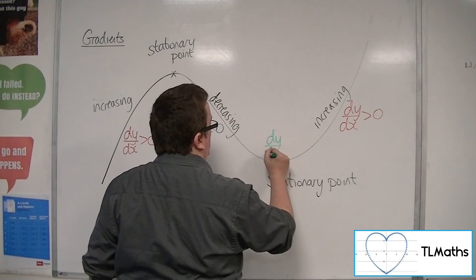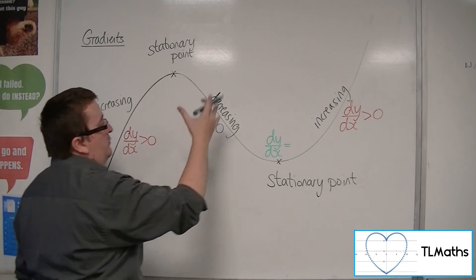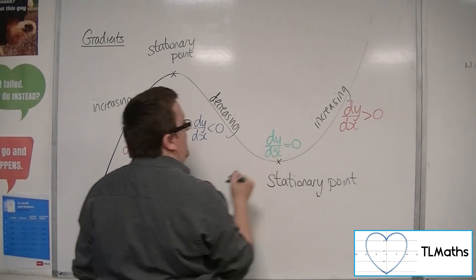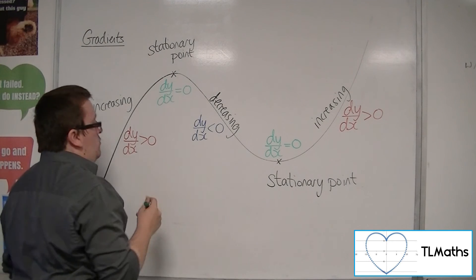And that's where the dy by dx has gone from being negative to positive, and so there must be this point where the gradient is 0.